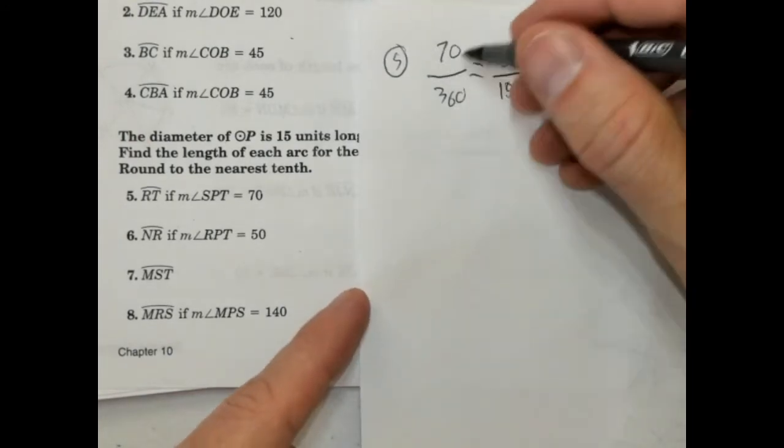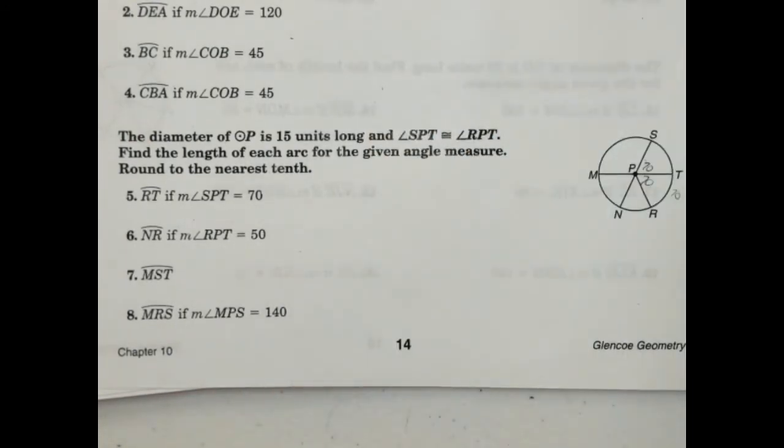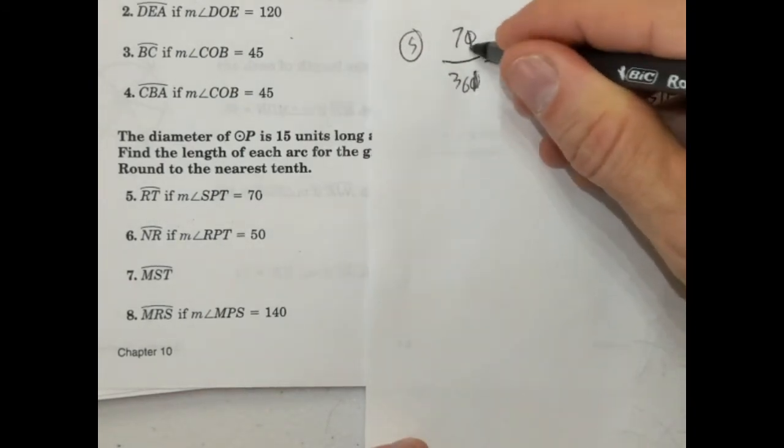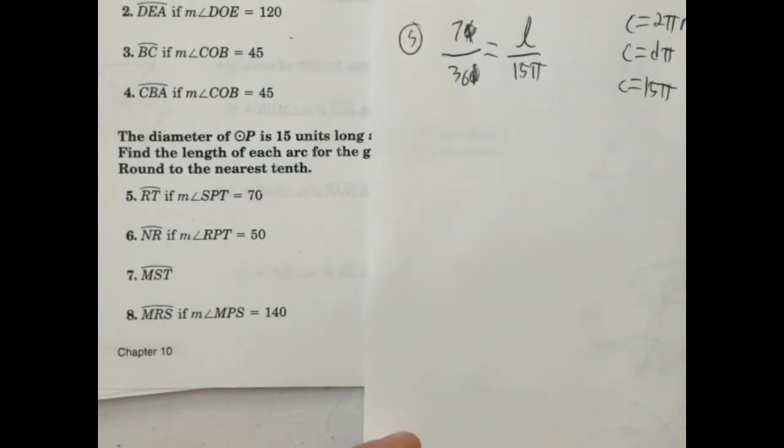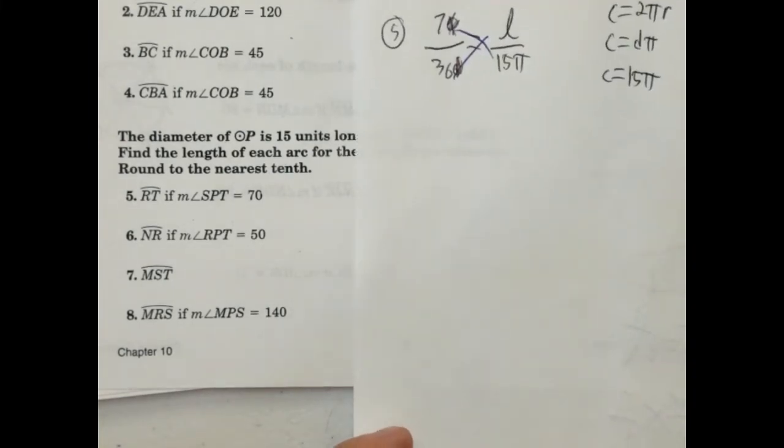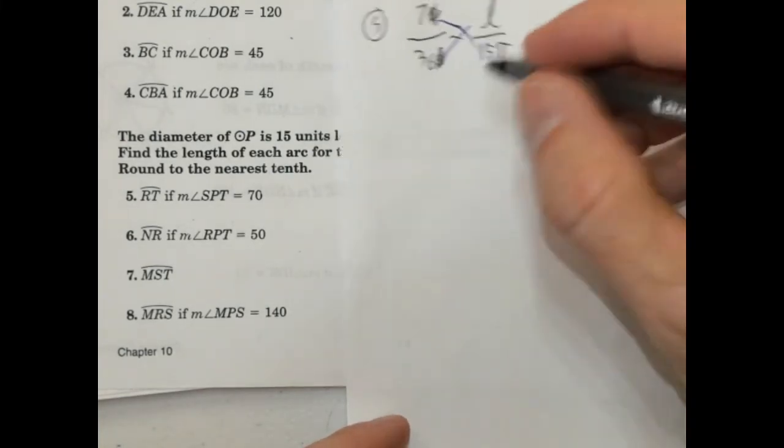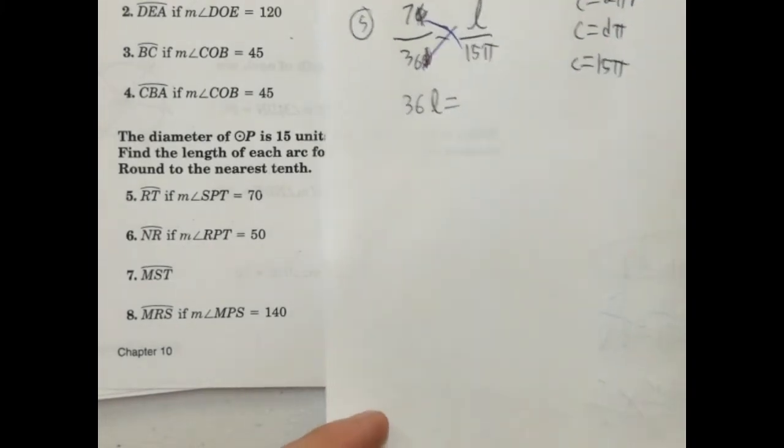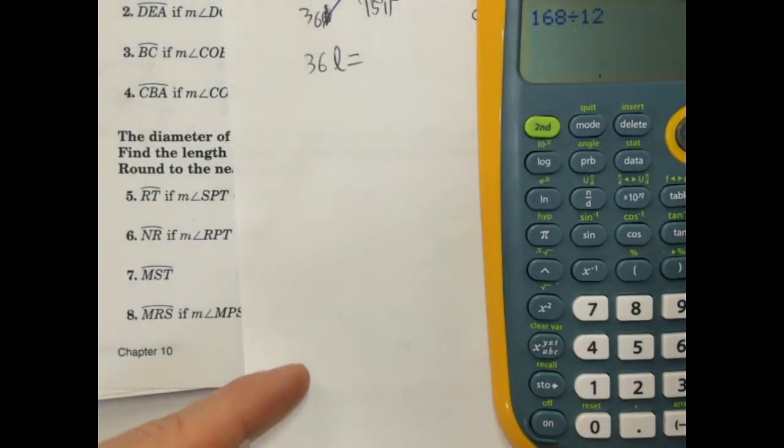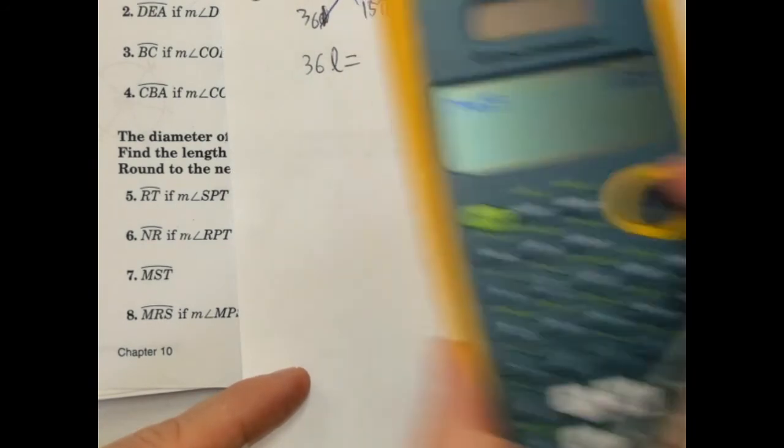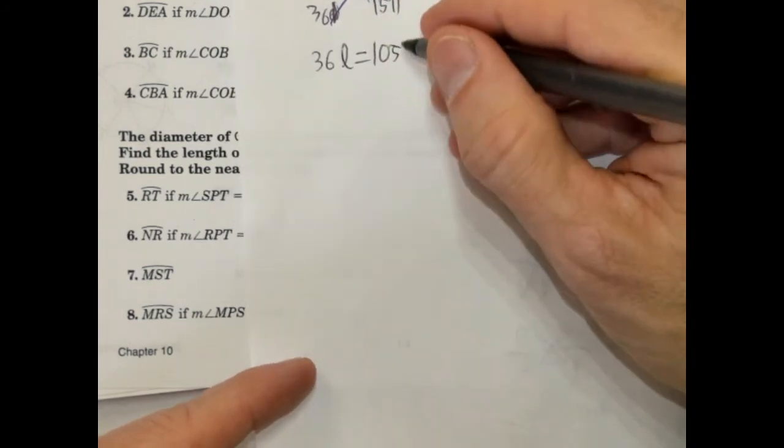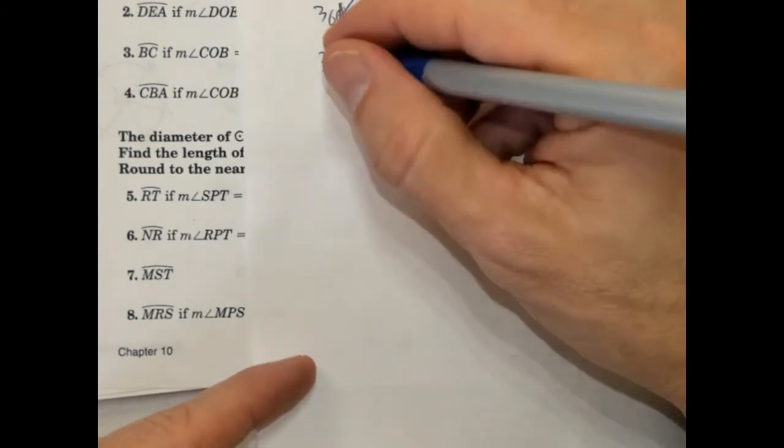Can we simplify this? They're both divisible by 10. So we're going to make that 7 over 36. And then we're going to cross multiply. So we're going to get 36 times L is 36L. And 7 times 15. So 7 times 15 is going to be 105. And now we're going to divide by 36. And that should be 105 pi. We're going to divide both sides by 36.